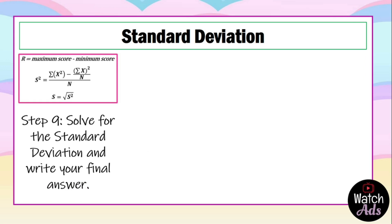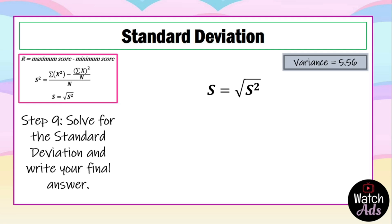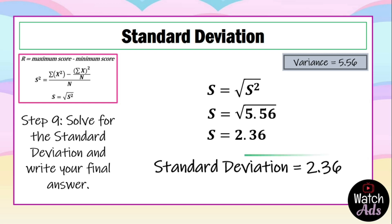For step 9, solve for the standard deviation. The formula is s = √s², which is simply the square root of the variance. Our variance is 5.56, so s = √5.56. If you are allowed to use a scientific calculator, press the square root sign and then 5.56. If not, I have a previous video on finding square roots manually. The standard deviation equals 2.36, and that is our final answer.